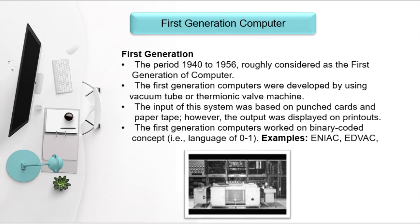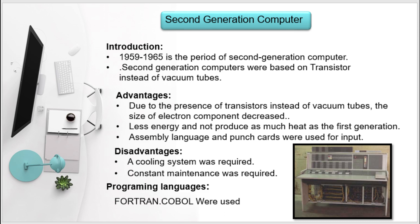The first generation computer was very large in size. Moving on to the second generation of computers, which was from 1959 to 1965. The second generation computer was built to be a much smaller size compared to the first generation.